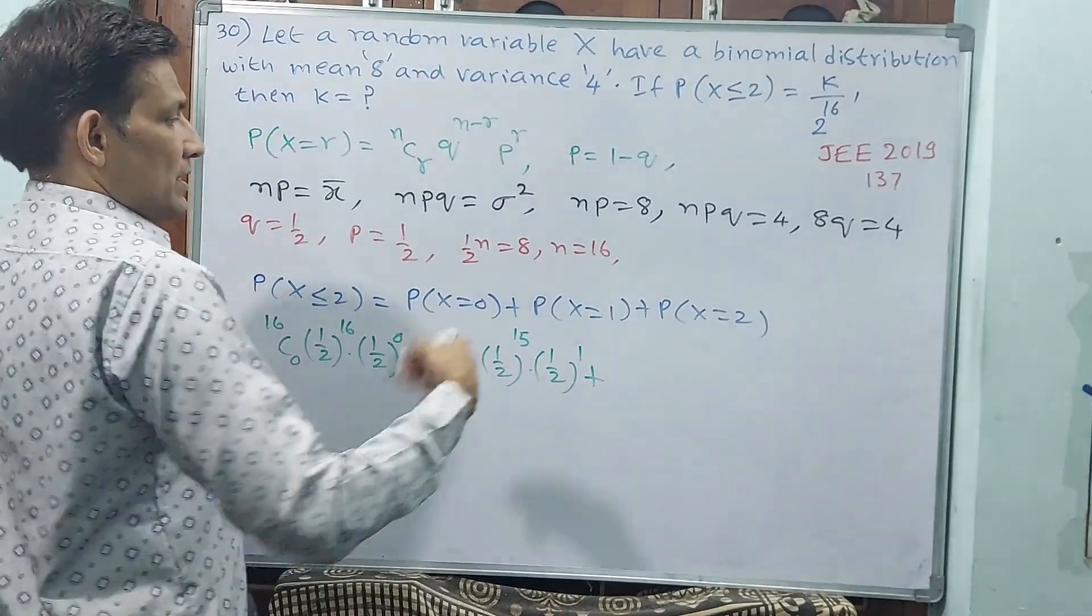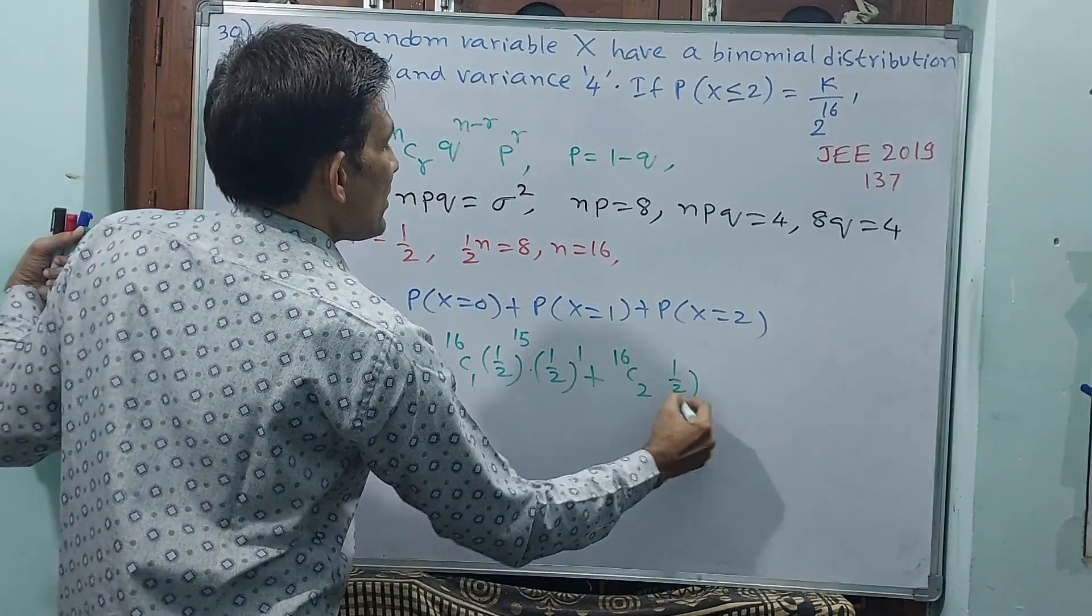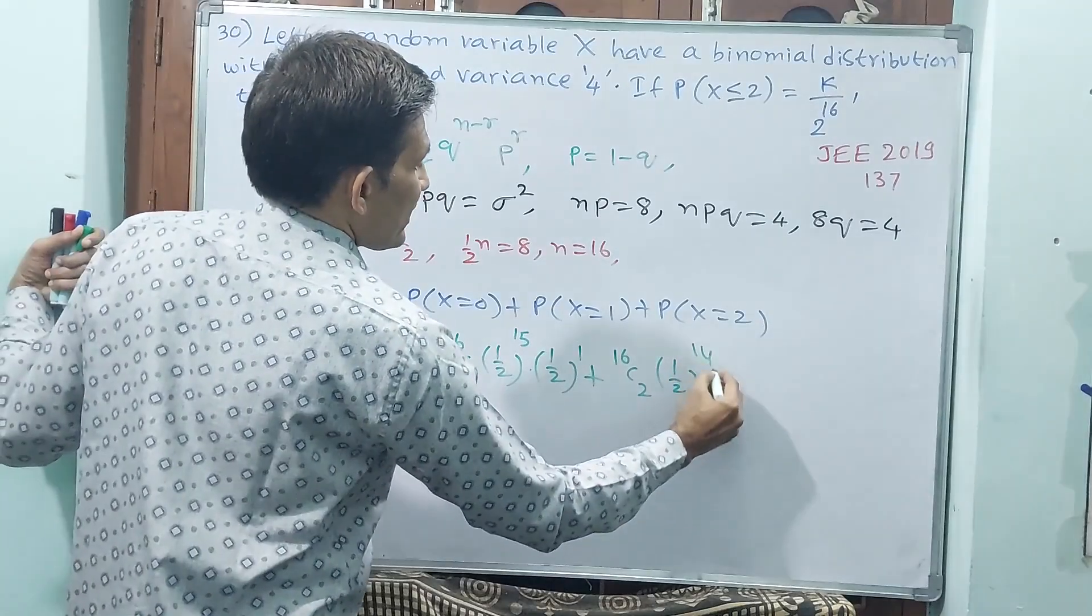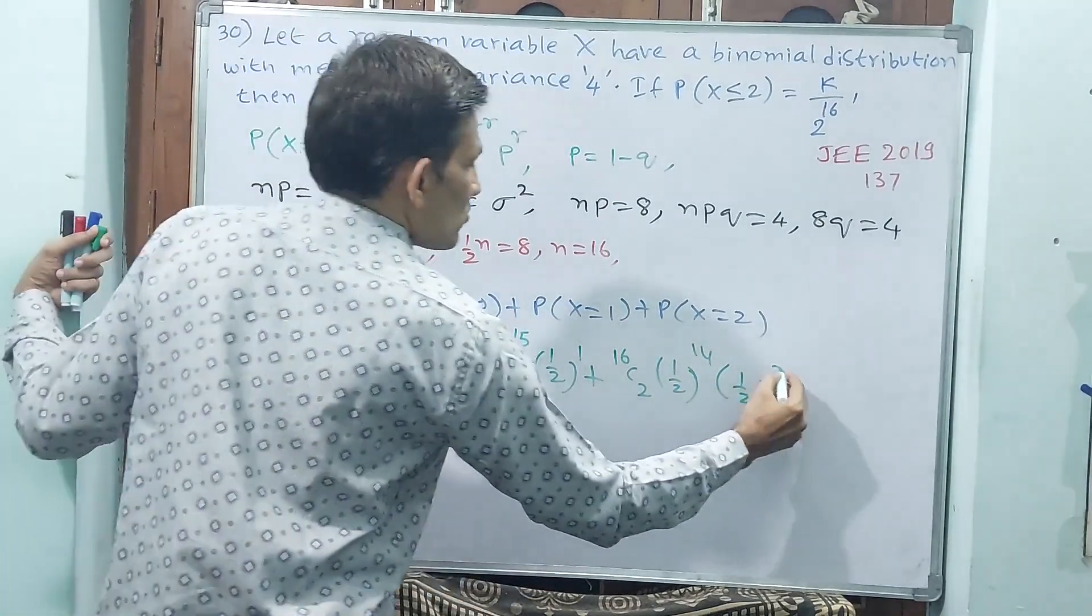Plus next, now r is 2. Let me see, 16C2 × (1/2)^14 × (1/2)^2.